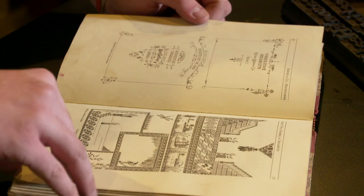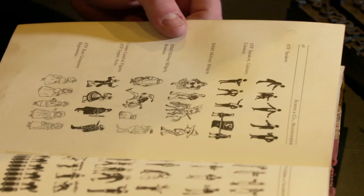And then we start getting into kind of some fancy things like borders. Borders run the whole gamut. They can be really simple, they can be really ornate.